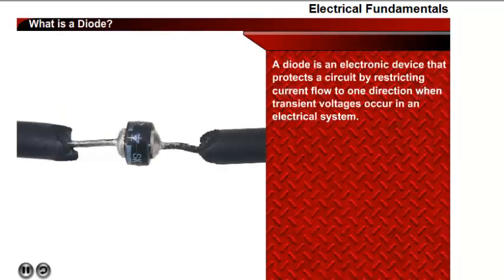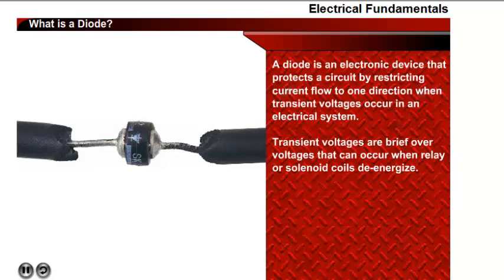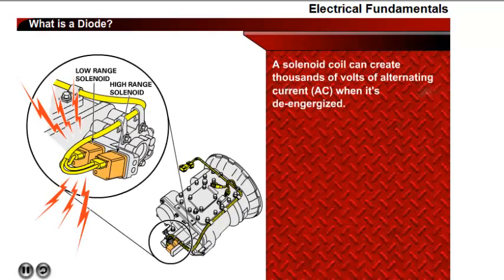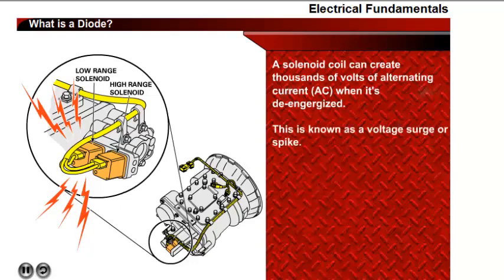A diode is an electronic device that protects a circuit by restricting current flow to one direction when transient voltages occur in an electrical system. Transient voltages are brief overvoltages that can occur when relay or solenoid coils de-energize. A 12-volt direct current solenoid coil can create thousands of volts of alternating current when the solenoid coil is de-energized. This energy is referred to as a voltage surge or spike.